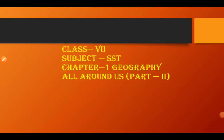Hello students. In chapter 1 geography part 1 video, we covered the meaning of environment, components of environment, biotic and abiotic environment, natural environment, and domains or different spheres of environment like lithosphere, hydrosphere, atmosphere, and biosphere. Now we will learn about ecosystem, food chain, food web, human environment, and man's impact on the environment.